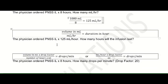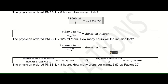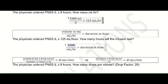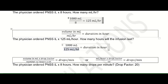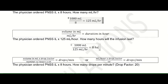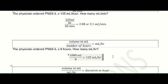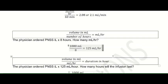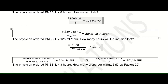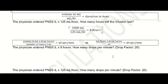If the physician ordered plain NSS 1 liter at 125 mL per hour, how many hours will the infusion last? That would be volume in mL — 1,000 mL — divided by 125 mL per hour. 1,000 divided by 125 gives a duration of 8 hours, meaning the intravenous fluid will be good for 8 hours. The first three computations can be done with simple arithmetic — try to familiarize the formula and apply it to these questions.